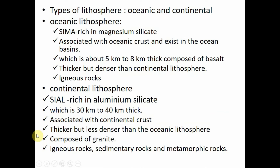The lithosphere is divided into two types. One is oceanic lithosphere, also called sima because it is rich in magnesium silica. Oceanic lithosphere is associated with the oceanic crust and exists in the ocean basins. It is about five to eight kilometers thick and composed of basalt. It is thicker but denser than continental lithosphere and has high density. Igneous rocks are found at the oceanic lithosphere.